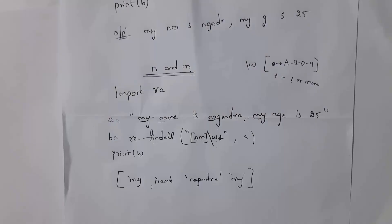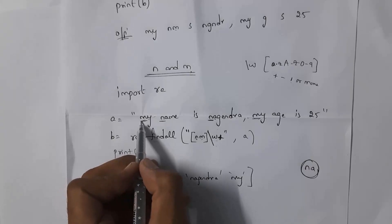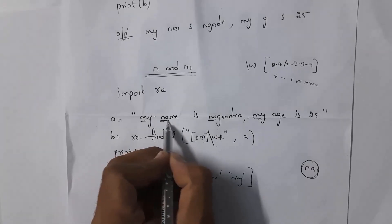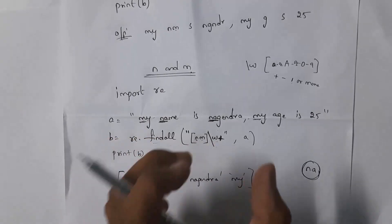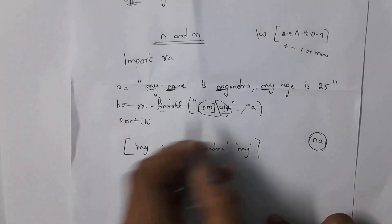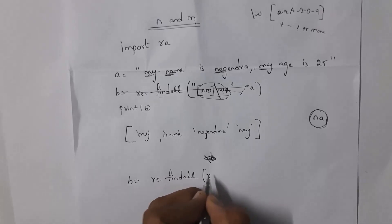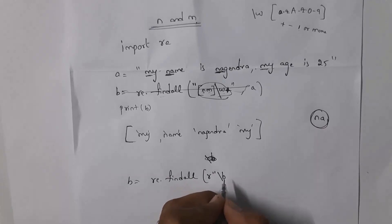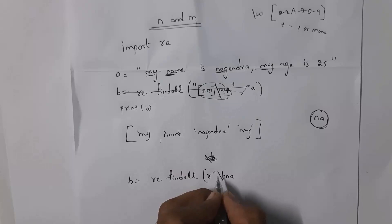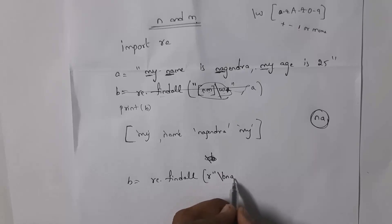Next, write a Python program to print words starting with 'na'. From the string, the words starting with 'na' are 'name' and 'nagendra'. Write b equal to re.findall. Use \b to identify a word boundary — so write r'\bna' inside quotation marks, prefixed with r for raw string. \b marks the start of the word, followed by 'na' for the starting characters.